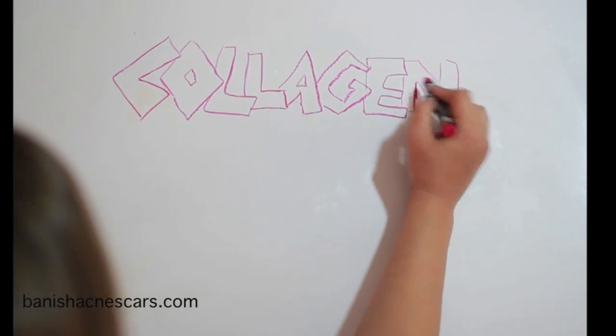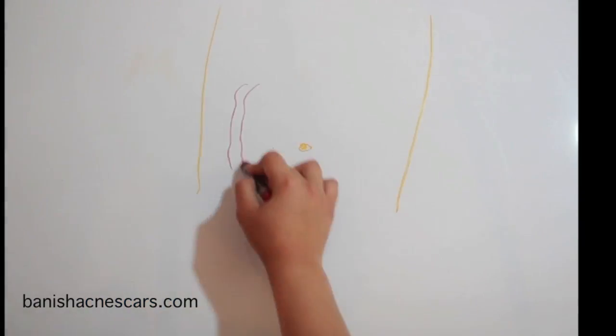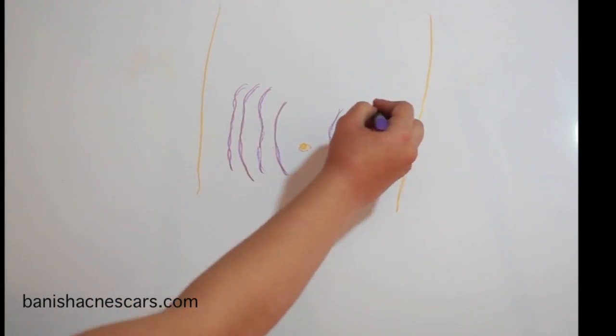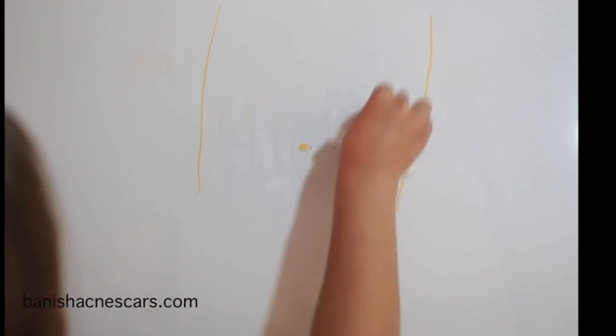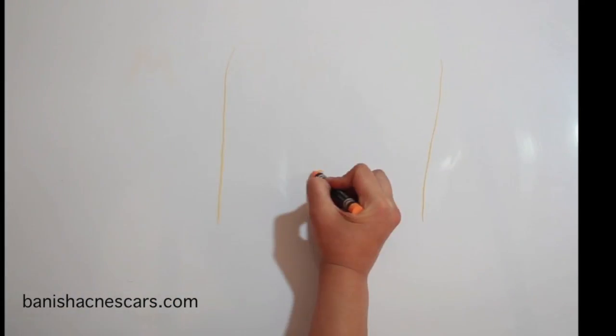Roller makes tiny little micro punctures to the dermis. This triggers your body's healing response. The purpose of rolling is to create new collagen to fill the tears in the dermis. It's an injury to promote healing.